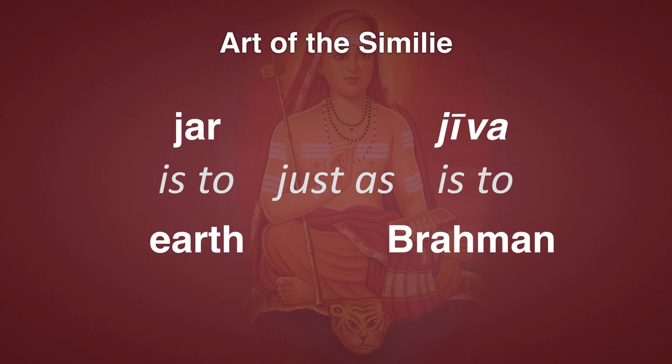Because we get hung up on the form, we miss the fact that the only ingredient in jiva is Brahman. So this is illusion. And to dispel the illusion, he's making a simile to say: just as the jar is to the earth, the jiva is to Brahman. Brahman is the ingredient; jiva is the product. And when the jiva is finished — like when the pot is broken — it simply goes back into Brahman, simply merges with Brahman again.